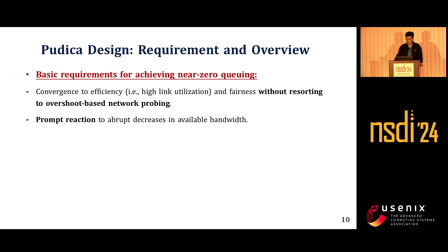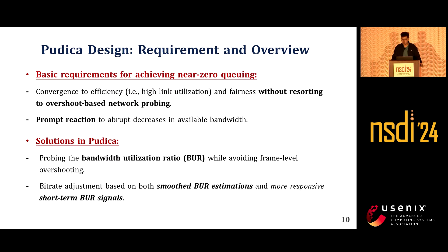After our analysis, Piotica should satisfy two basic requirements. The first is to converge to efficiency and fairness without relying on overshoot-based network probing. Second, Piotica should agilely adapt to abrupt bandwidth decreases. To fulfill this, we develop an approach to probe bandwidth utilization ratio — BR — instead of directly measuring the bandwidth itself. Using our method, Piotica enables convergence without requiring overshoots at the frame level. In addition to windowed BR estimation, Piotica also leverages very recent BR signals to enhance responsiveness to congestion.